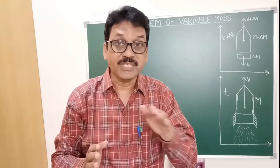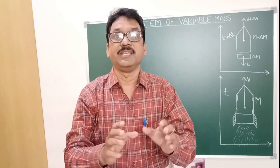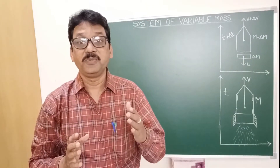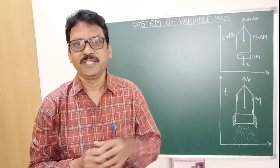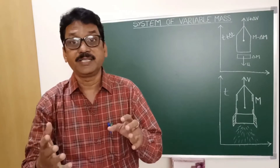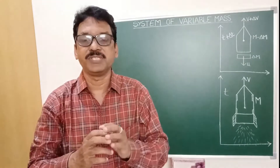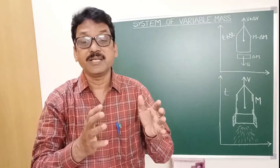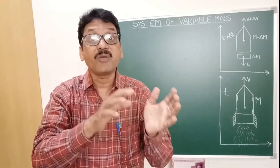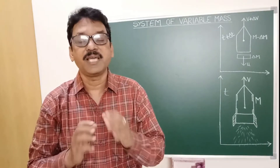If the mass of the system varies with time, then it is called a variable mass system. The best example for a variable mass system is a rocket. In a rocket, it consists of a combustion chamber in which fuel is stored. The fuel is burned, which releases hot gases, raising the pressure inside the combustion chamber. Due to this high pressure, the combustion gases are ejected out from the nozzle with high exhaust velocity.